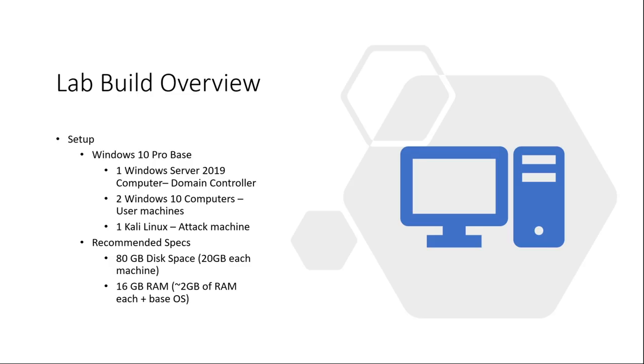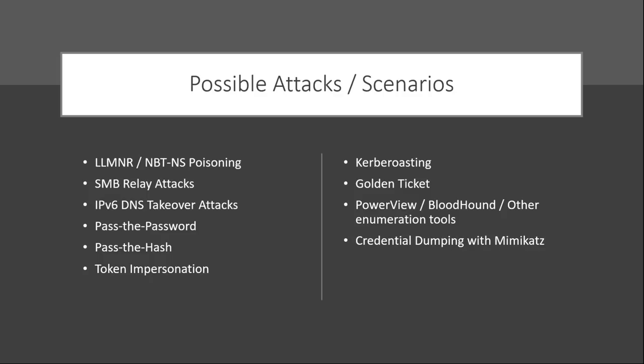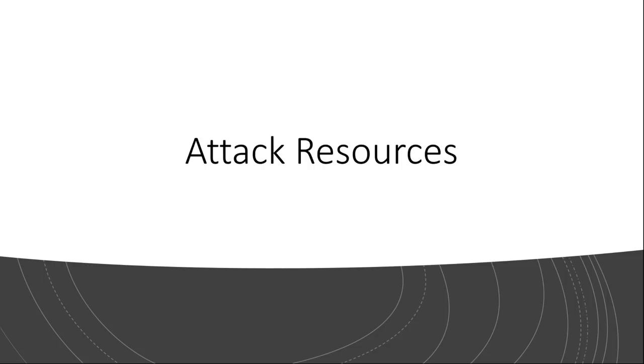You can apply two gigabytes of RAM to each machine, plus your base OS. If you only have eight gigabytes, you can use one gigabyte per machine — just understand the lab will run very slowly. Let's quickly cover some possible attacks and scenarios: LLMNR poisoning, golden ticket attacks, enumeration with PowerView or BloodHound, and credential dumping with Mimikatz. There's a lot more, but these are the really common ones. Don't worry if you don't know what these are yet — that's okay.